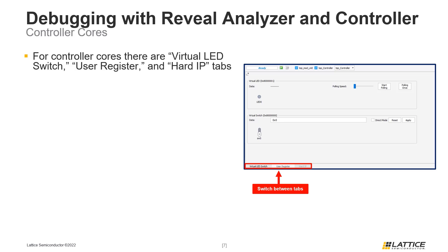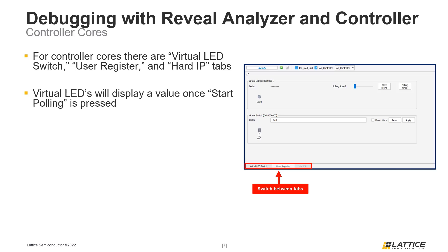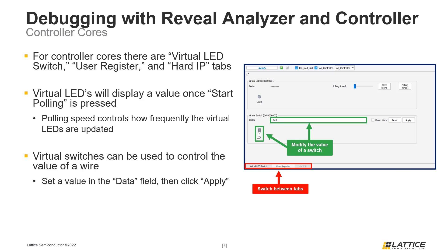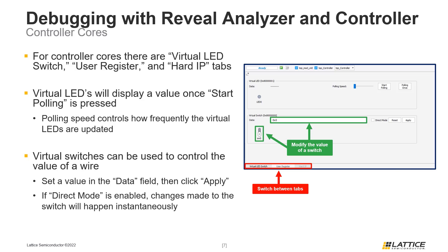The Virtual LED/Switch tab is used to manage the virtual signals configured in Reveal Inserter. At the top of the window are the virtual LEDs that were set up. To begin observing LED values, click the Start Polling button. The polling speed setting controls how frequently the virtual LED is updated. In the bottom half are the virtual switches, where users can modify the value of a virtual switch by toggling the button icon or entering a value in the data field. Users confirm the value using the Apply button. The Direct Mode option can be enabled so the virtual switch functions like a real switch, making any entered values input instantaneously without requiring the Apply button.